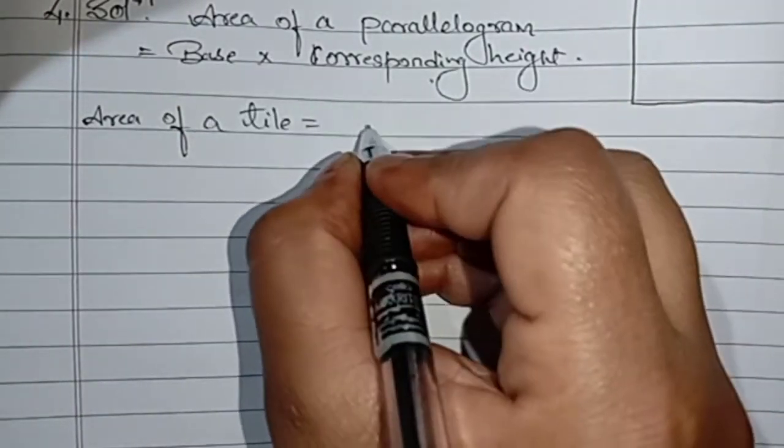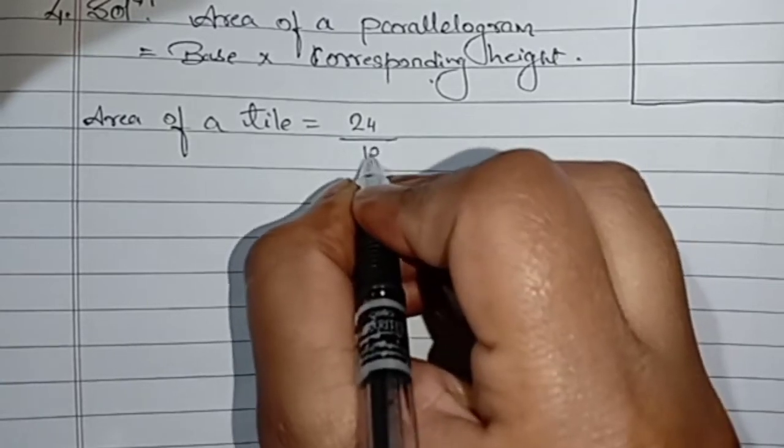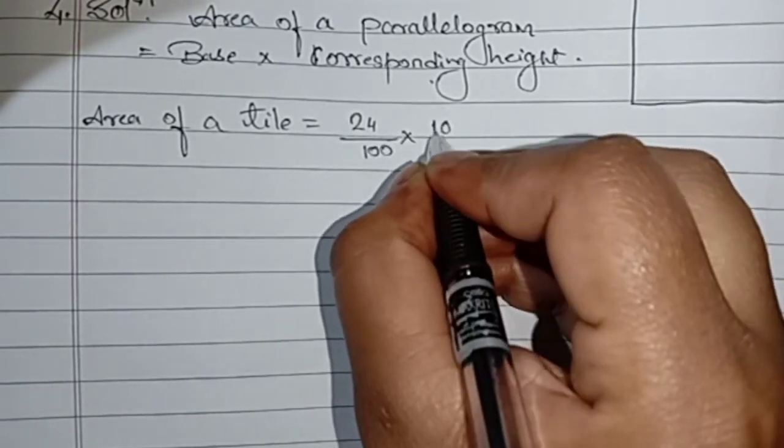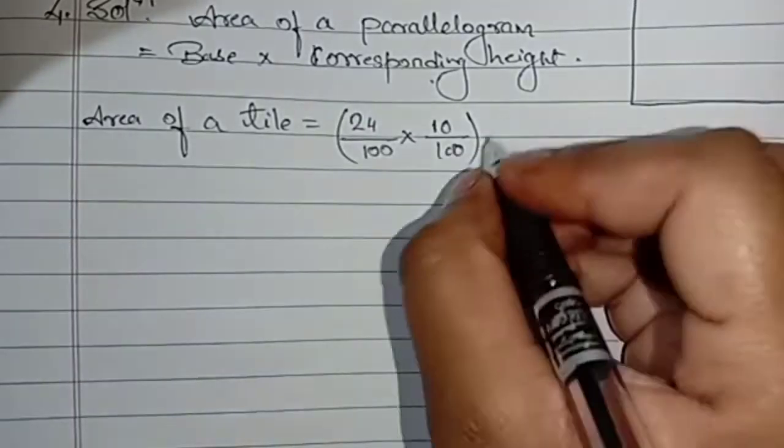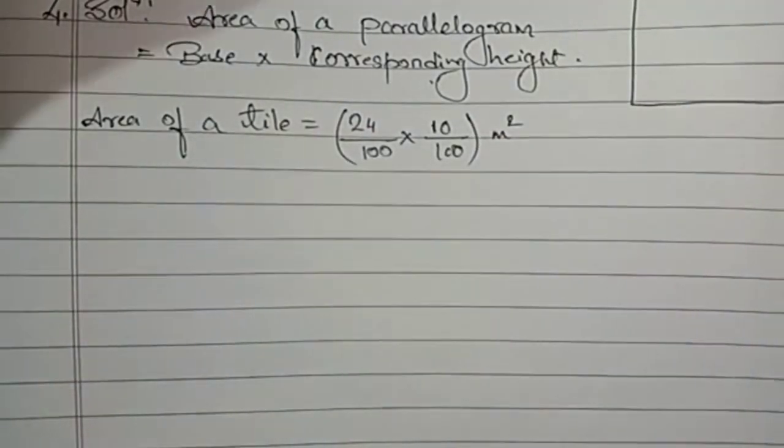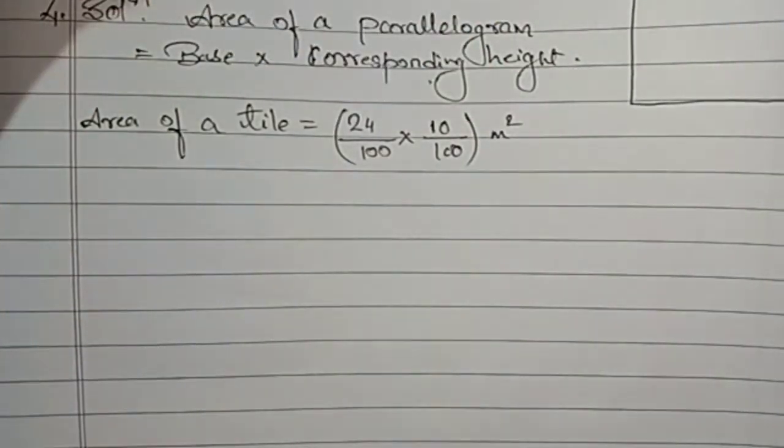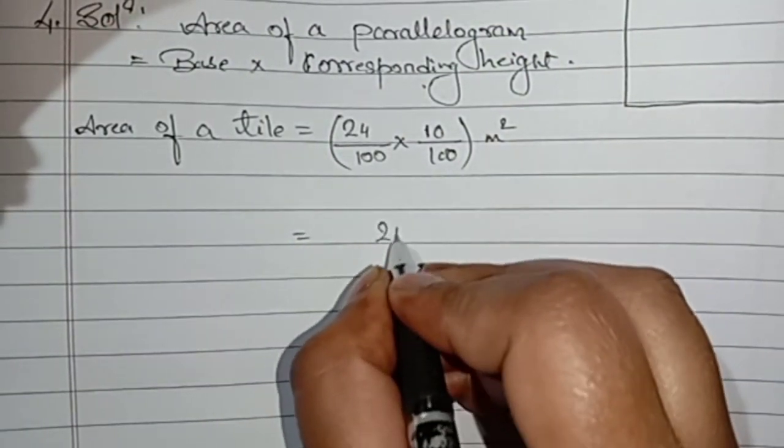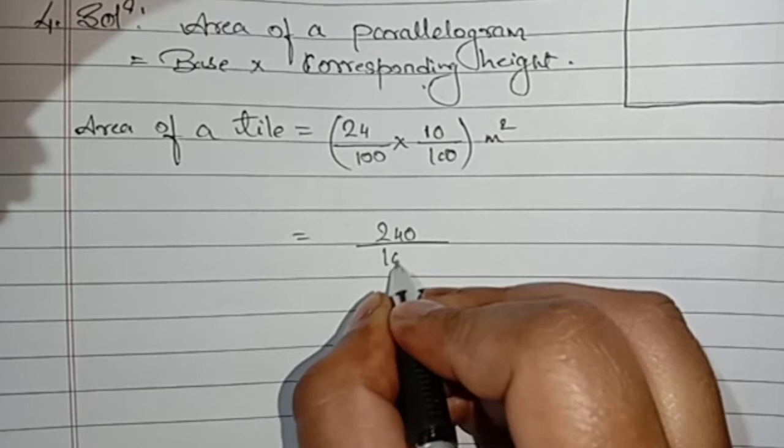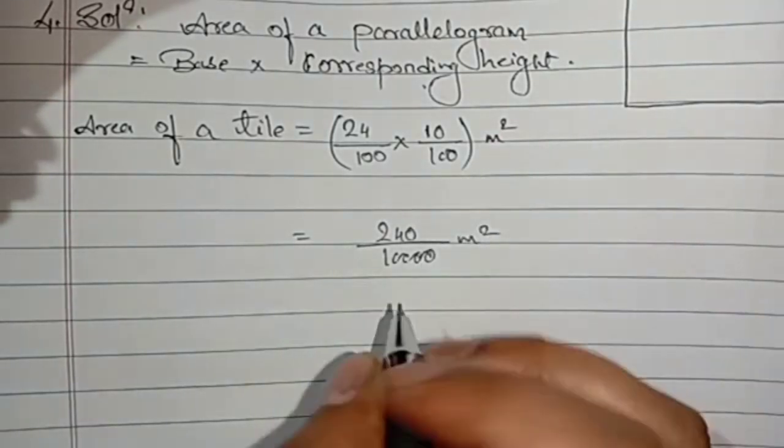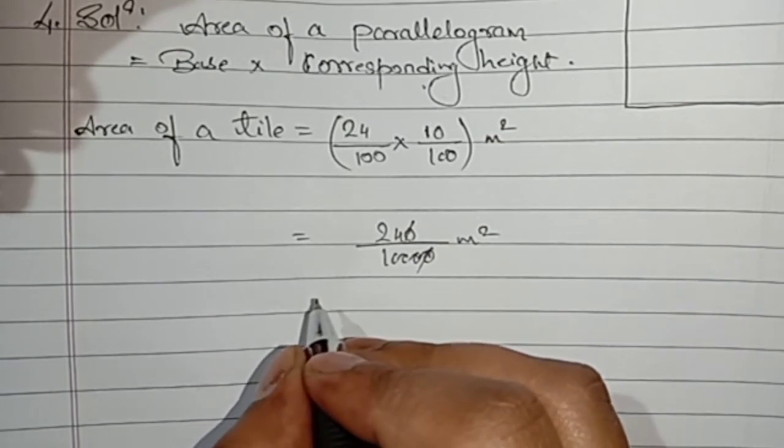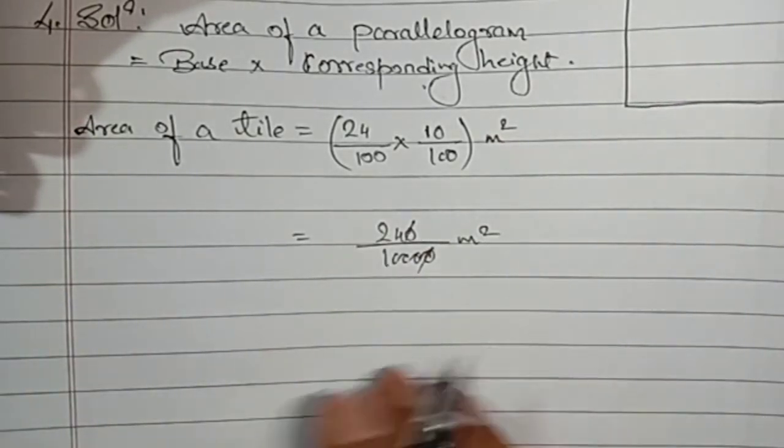Area of a tile means base, 24 divided by 100 into height and corresponding height is given 10, so 10 divided by 100 which will be meter square. We already converted from centimeter equal to meter. Now 240 divided by 10000 meter square. 0 0 cancelled, 0 0 cancelled.